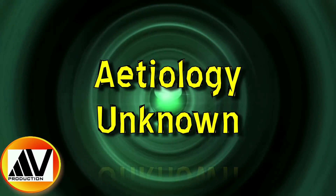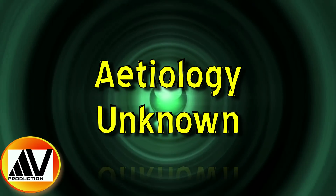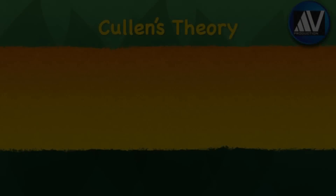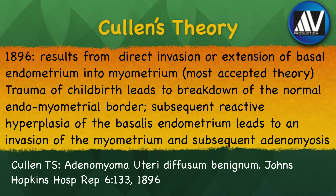Since the exact etiology of adenomyosis is not known, several different pathophysiological mechanisms have been suggested. In 1895, von Recklinghausen suggested that adenomyosis arises from Wolffian relics, i.e., it is of Müllerian origin. In 1898, Ivanhoff was of the opinion that adenomyosis occurs due to penetration of the myometrium from serous coat after metaplasia. Hyperestrogenemia has also been proposed as an initiating factor. However, the most accepted theory is that put forward by Cullen in 1896.